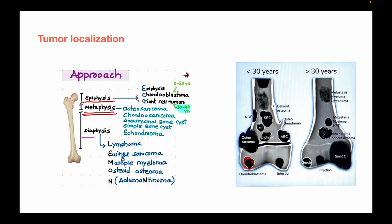So the mnemonics for tumor localization are: ECG for epiphysis, then the five for metaphysis, then LEMON for diaphysis. Bone tumors are also divided into less than 30 years and after 30 years groups. Metastasis, myeloma, lymphoma, chondrosarcoma, and enchondromas can be seen after 30 years.